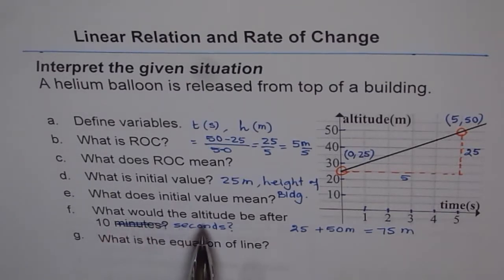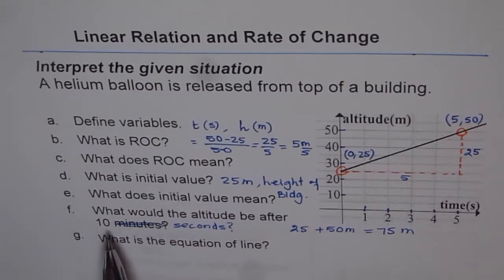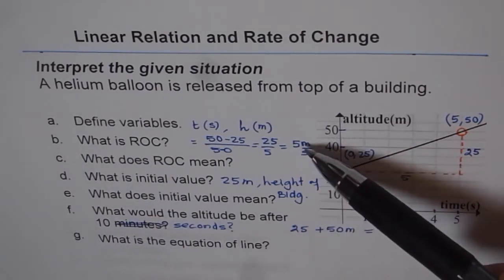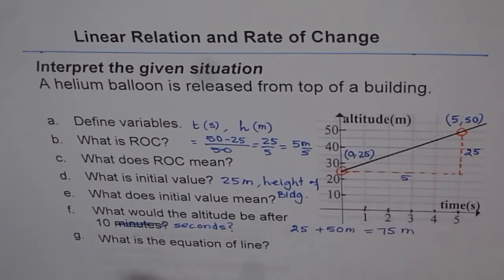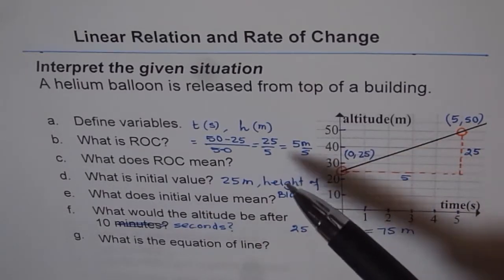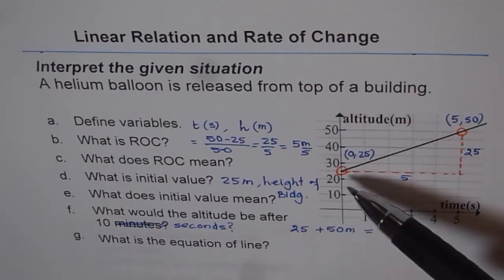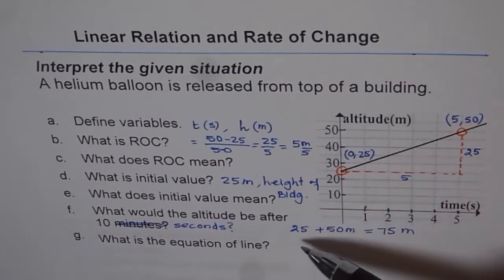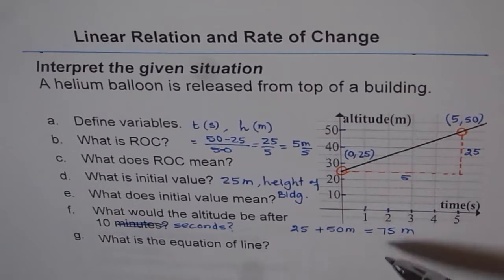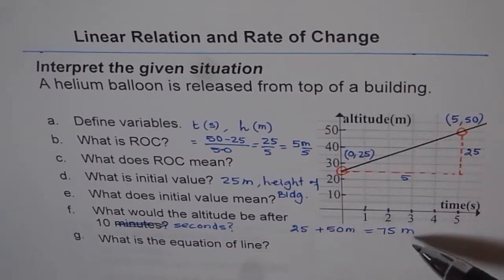To summarize: what would the altitude be after 10 seconds? Rate of change is 5 meters every second, so in 10 seconds it will increase by 10 × 5 = 50 meters. Change from where? Change from the starting point of 25. Add 50 to 25 and the answer is 75 meters.